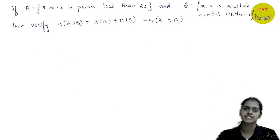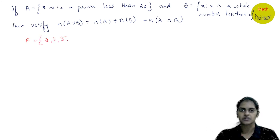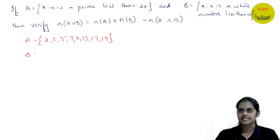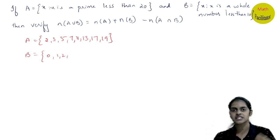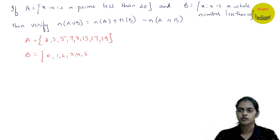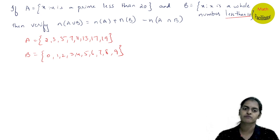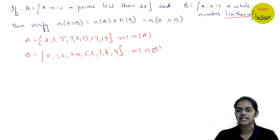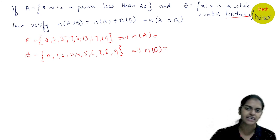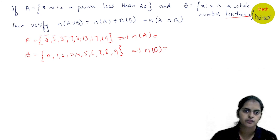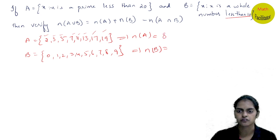Next question: x is a prime number less than 20 — so A = {2, 3, 5, 7, 11, 13, 17, 19}. x is a whole number less than 10 — whole numbers start from 0, so B = {0, 1, 2, 3, 4, 5, 6, 7, 8, 9}. The cardinal number n(A) is the number of elements — n(A) = 8 and n(B) = 10.